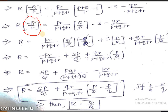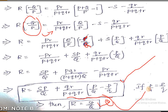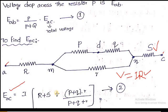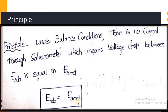After all manipulations and cancellations, the unknown resistance is R = (S × P/Q) + [q × r / (p + q + r)] × [(P/Q) − (p/q)]. This is the unknown resistance value obtained from the Kelvin's double bridge. If P/Q equals p/q, the second term becomes zero and we get R = S × P/Q. Remember: if you know the values of E_AB and E_AMD, you can easily find the value of the unknown resistance.